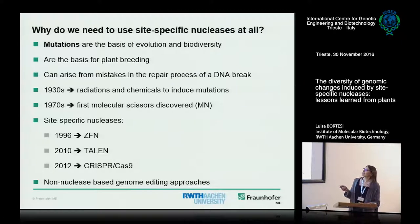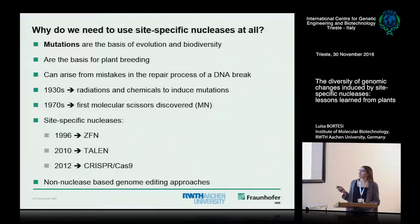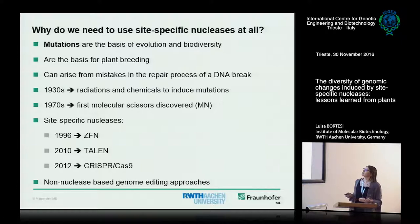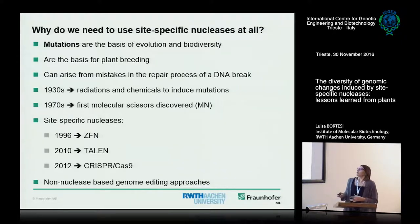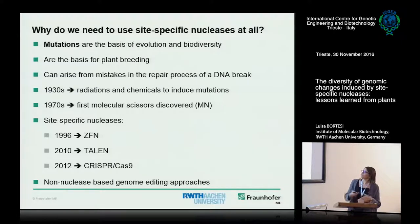Mutation at the molecular level arises from mistakes in the repair process when DNA is broken. Most of the time the DNA is repaired perfectly, but sometimes mistakes introduce mutation and you have diversity. When men realized this, they started in the 1930s using radiation or chemicals to induce mutations in the crops they wanted to use for agriculture and breeding. This was a major breakthrough, but it's a rather complex and long procedure because you were inducing mutations at random. You have to do very large screenings to find the traits you're looking for, and you have many background mutations that need to be removed by back-crossing.